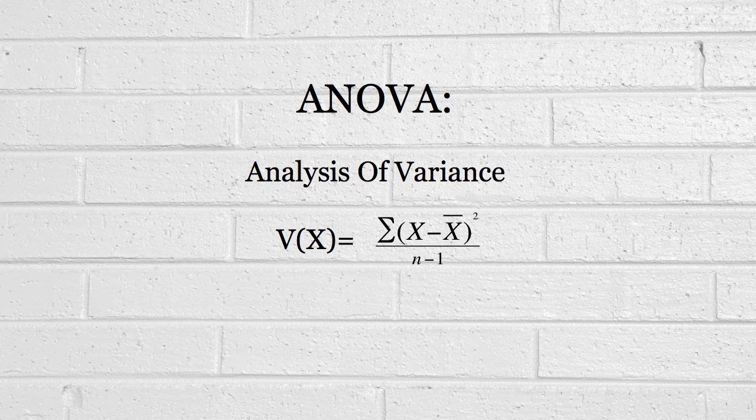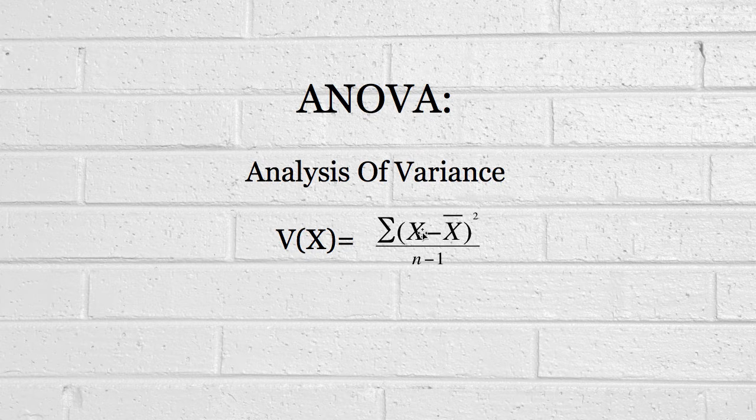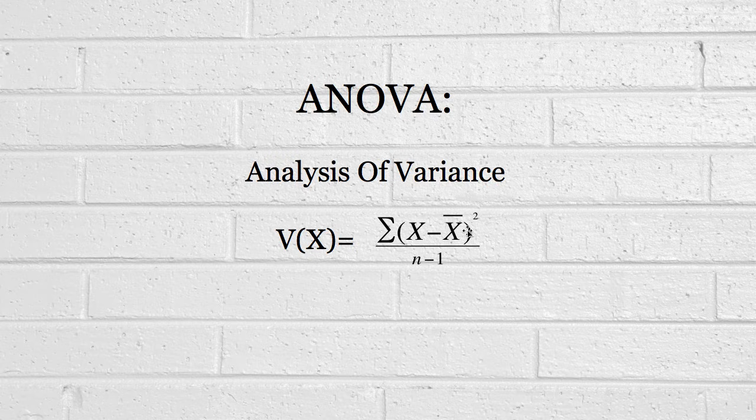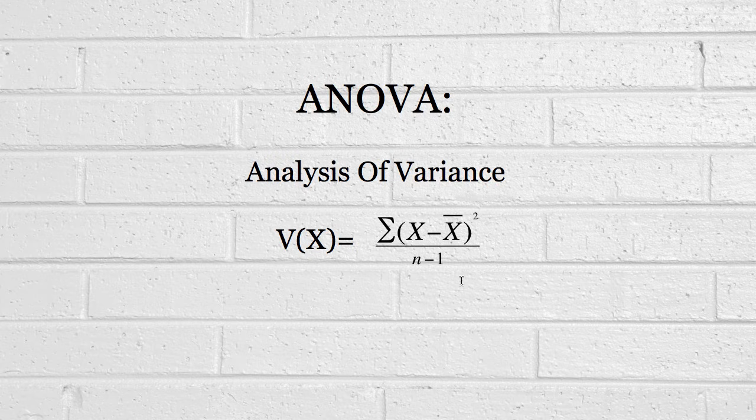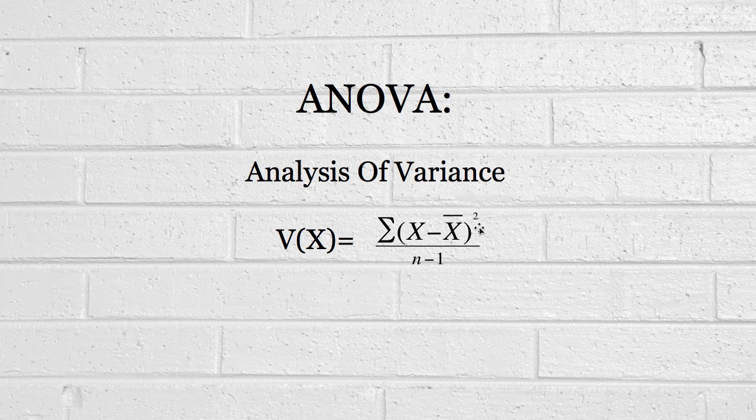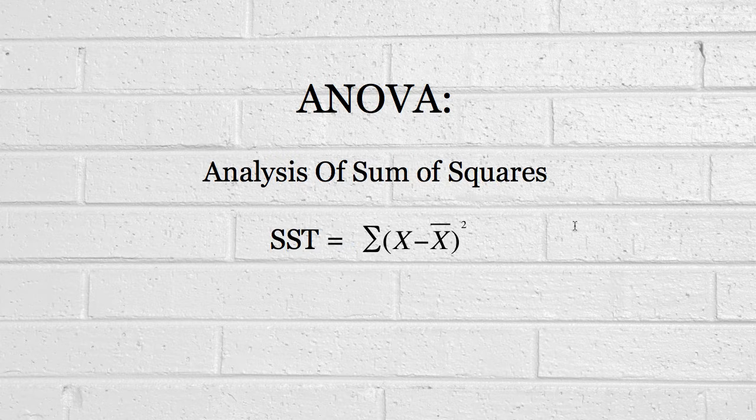So, first step is to consider what variance actually is. Hopefully, you've seen this formula before, but if we look at it, it's just the deviation from the mean of each observation. Each observation X, we calculate its deviation from the mean, minus X bar, and then we square it and add them all together. That's what that sum symbol means. We're essentially finding some measure of the spread of the data.